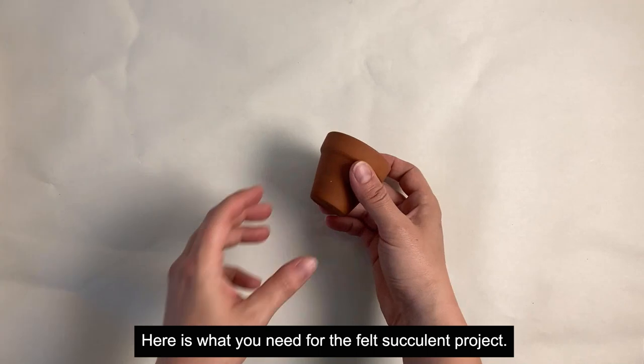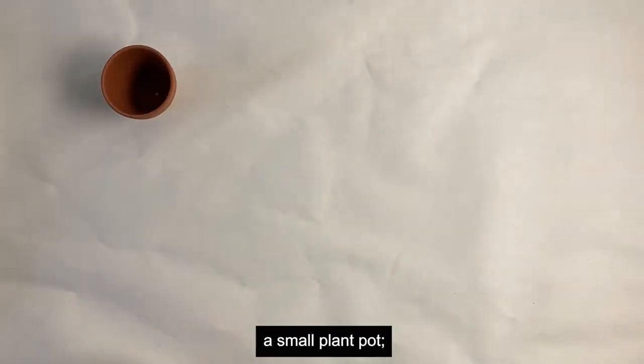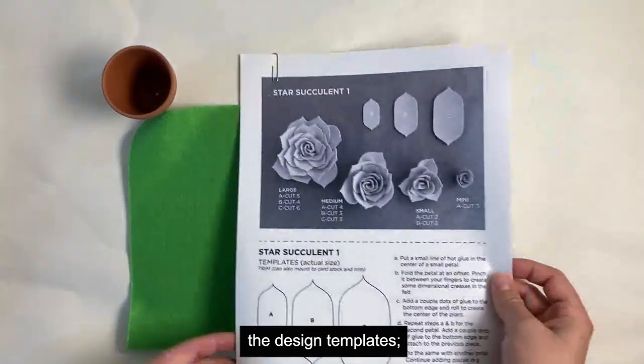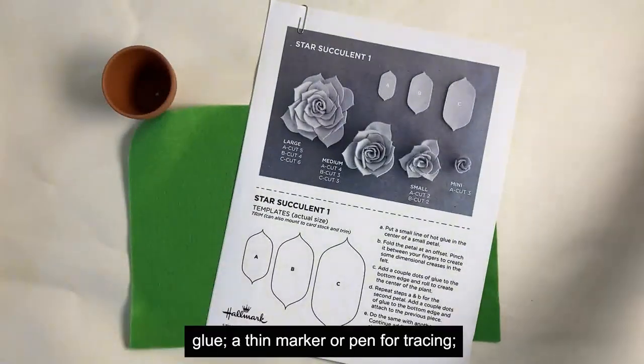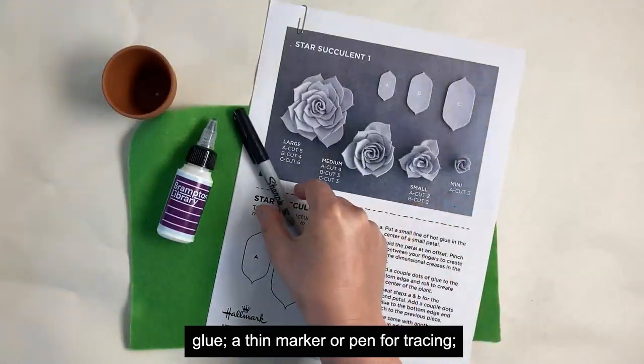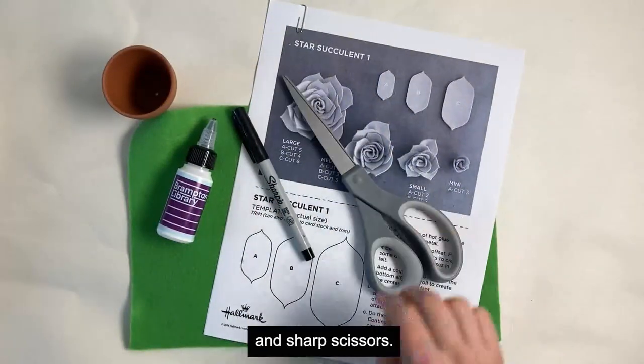Here is what you need for the felt succulent project. A small plant pot, some green felt, the design templates, glue, a thin marker or pen for tracing, and sharp scissors.